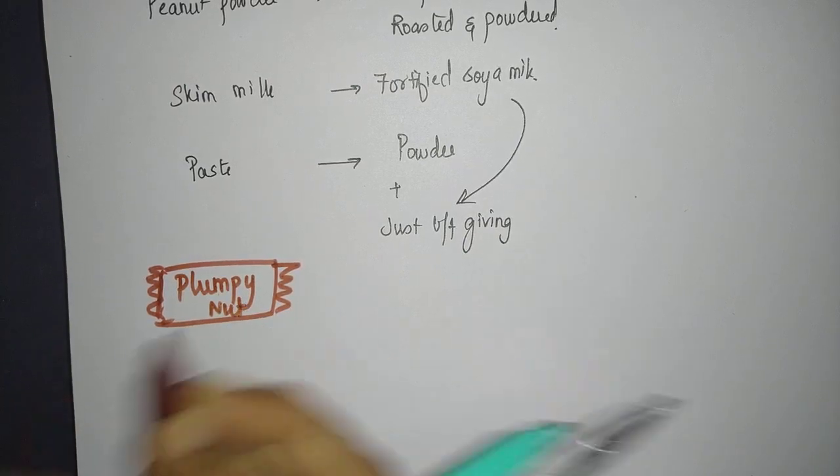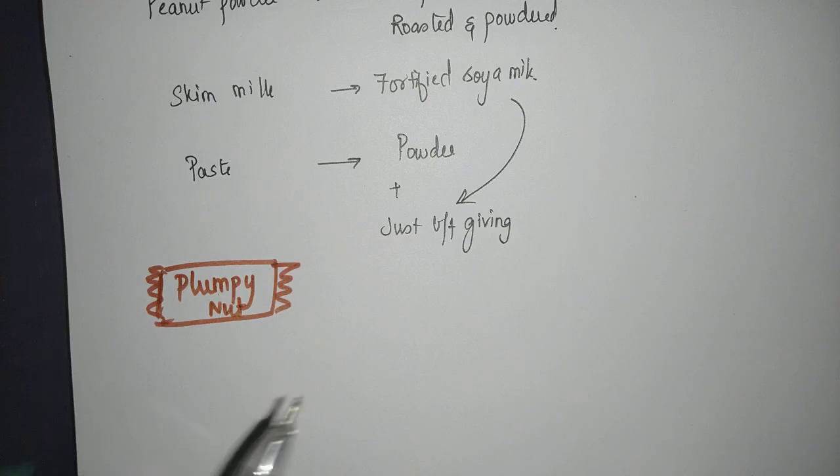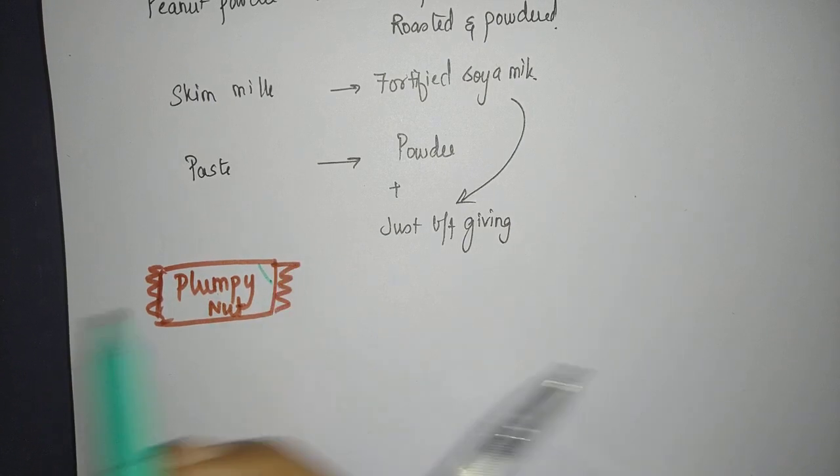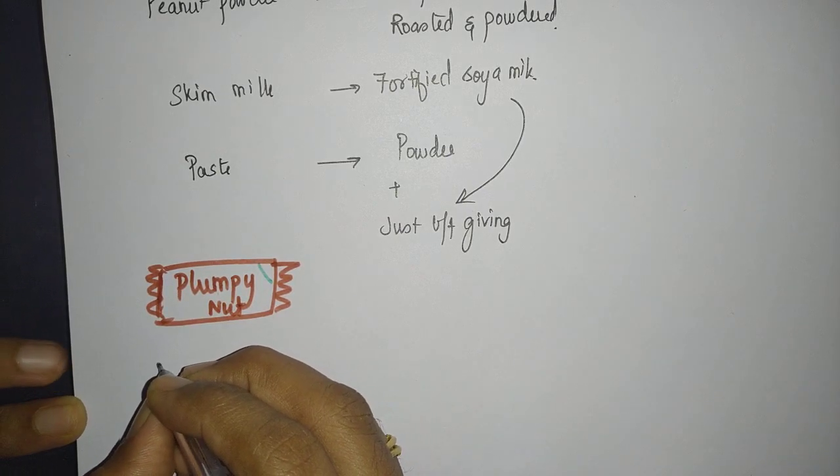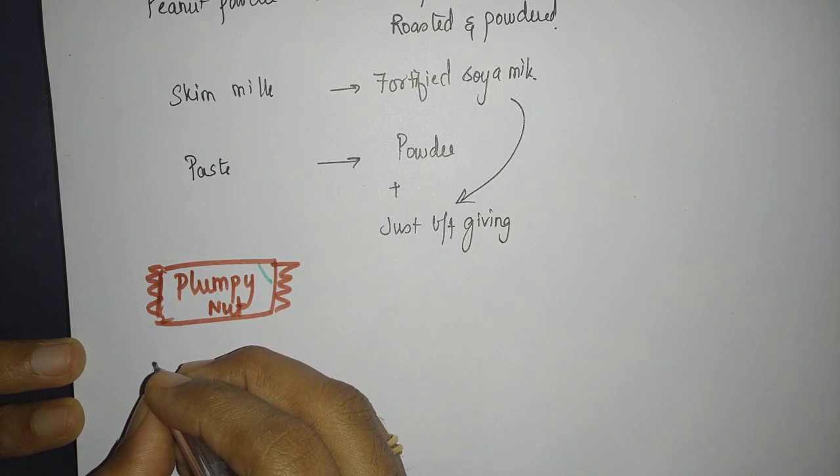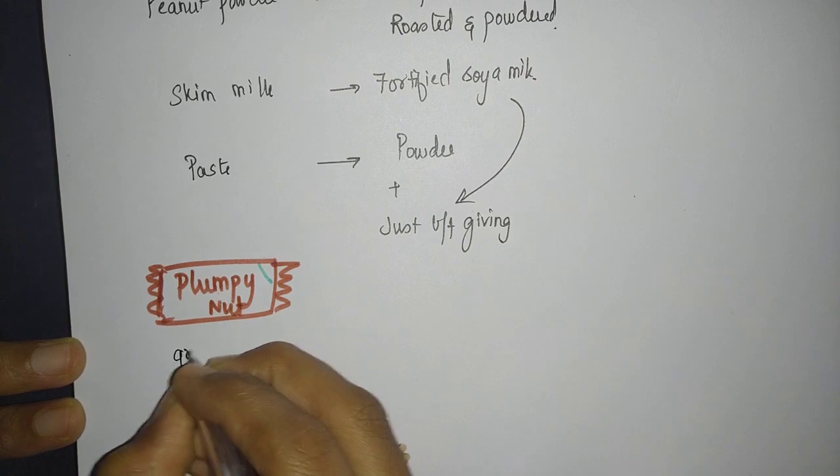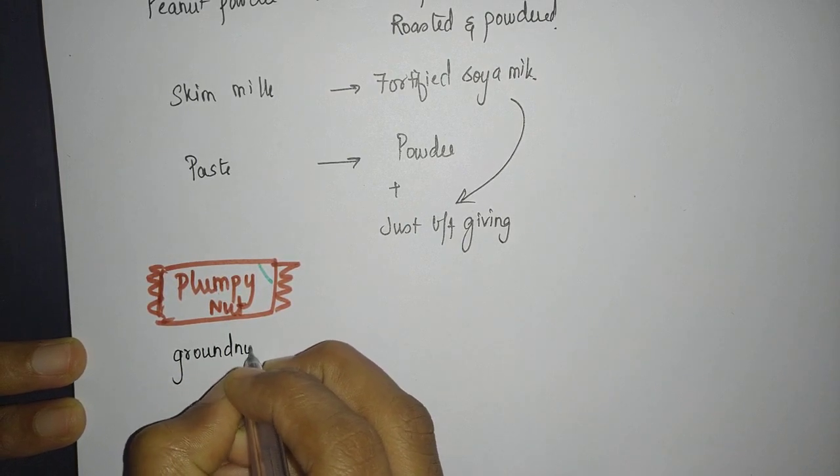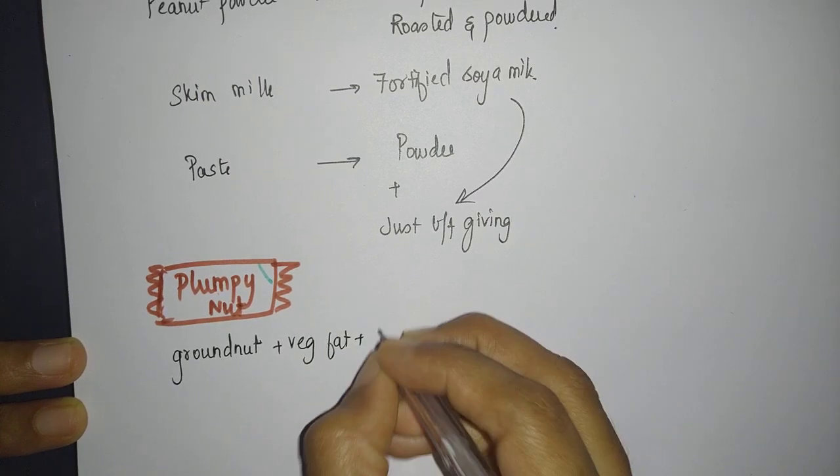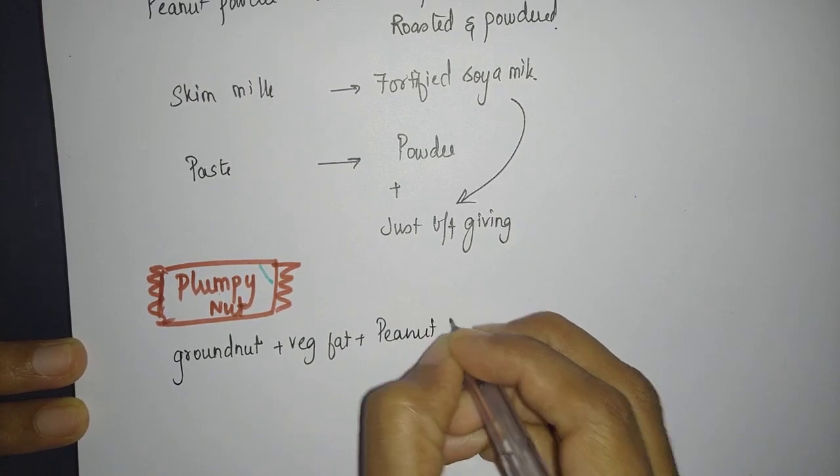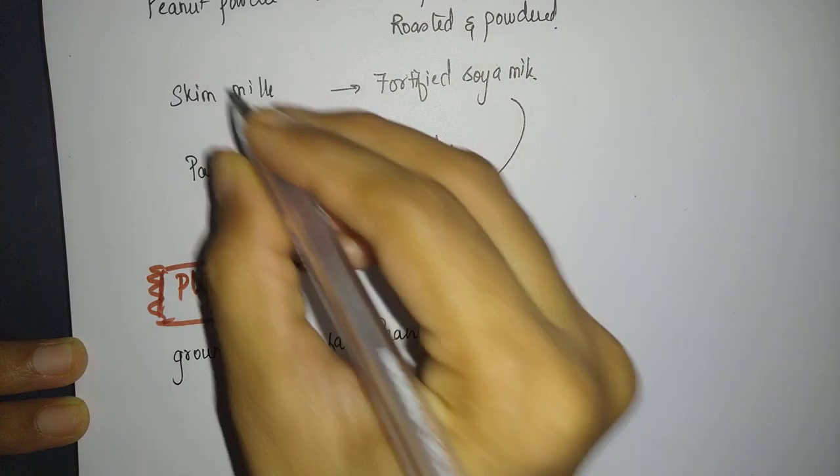Plumpy Nut is available in small sachets. This is a peanut-based paste. This has to be cut and then the paste is eaten by the kids. Basically, this contains groundnut, vegetable fat, peanut butter, and of course skimmed milk powder.